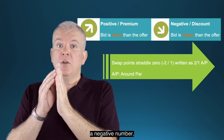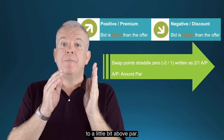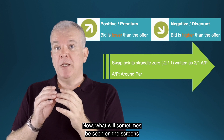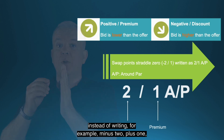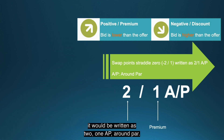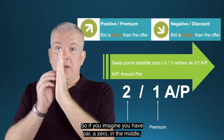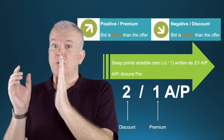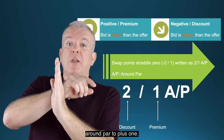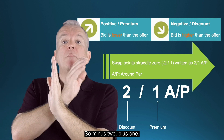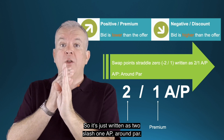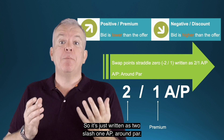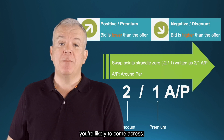The forward rate could range from a negative number to a little bit above par. What will sometimes be seen on the screens, instead of writing, for example, minus 2 / plus 1, it would be written as '2/1 AP' — around par. So if you imagine par as zero in the middle, you have minus 2 to plus 1 around par. It's just written as 2/1 AP — around par. It's just a bit of terminology you're likely to come across.